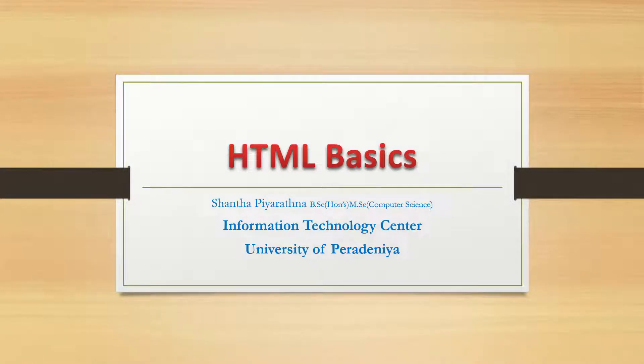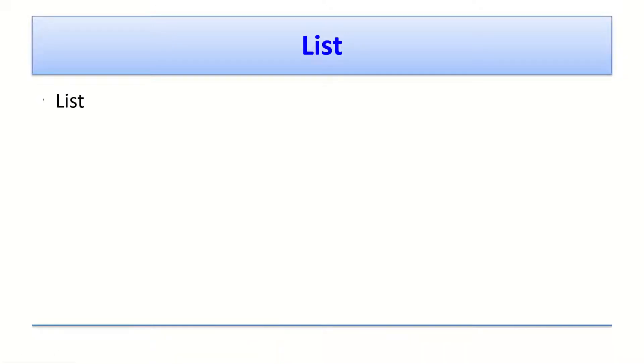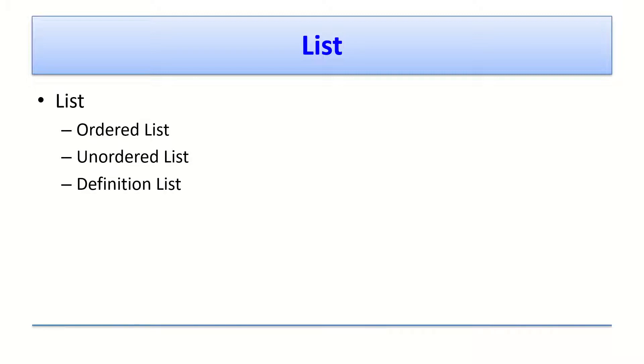This is IT 301 Web Page Construction course. Today we are going to discuss another HTML basic — text. Let's see how to insert a list into our web page. When we discuss lists, there are three kinds: ordered list, unordered list, and definition list. Let's take them one by one.